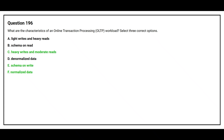The correct answers are Option C: Heavy writes and moderate reads; Option E: Schema on write; and Option F: Normalized data.